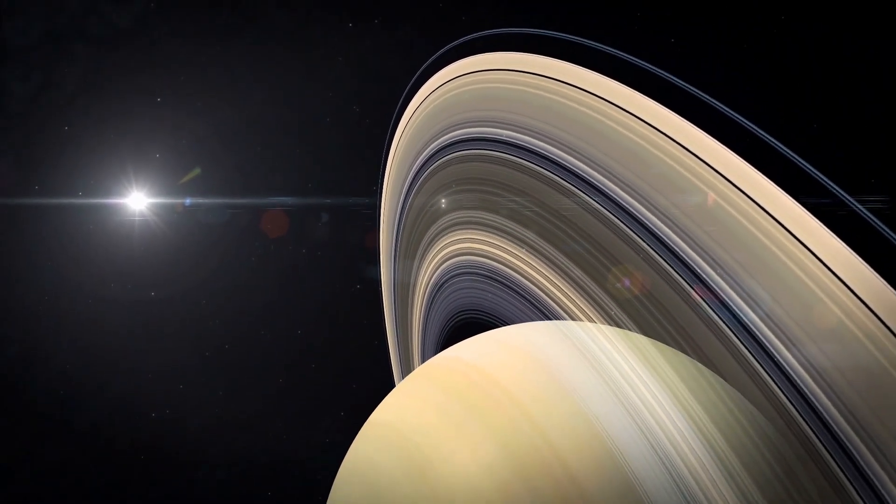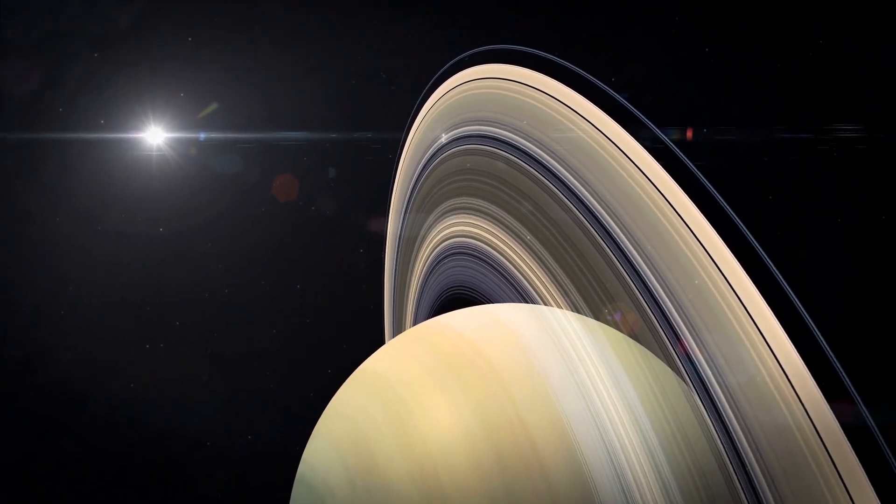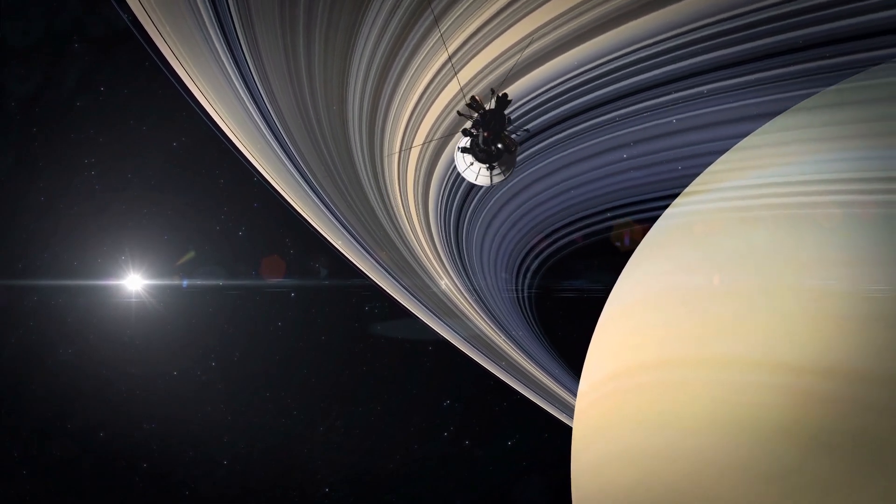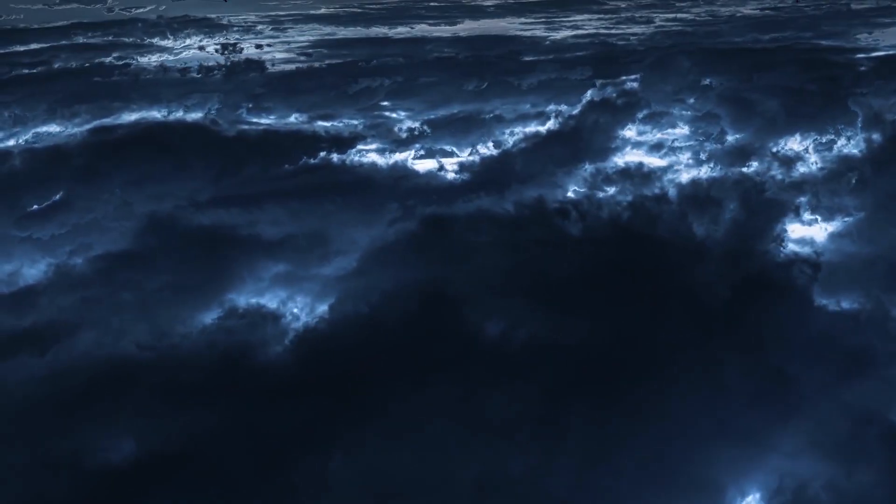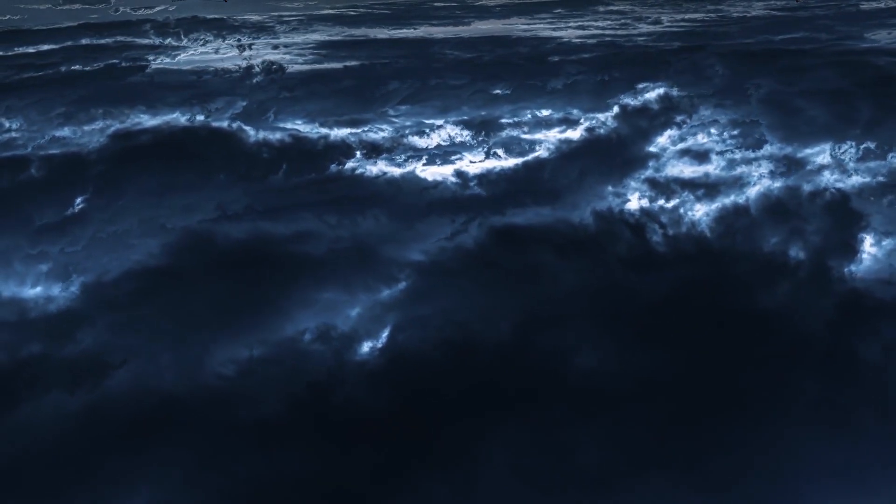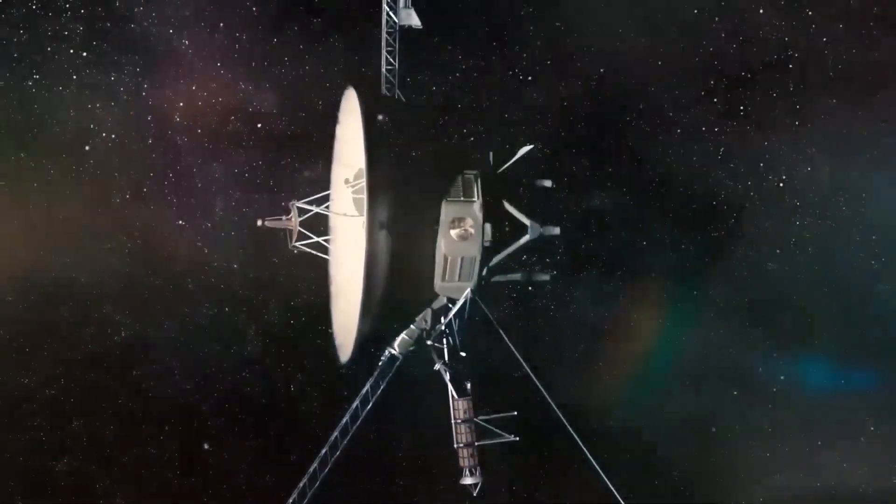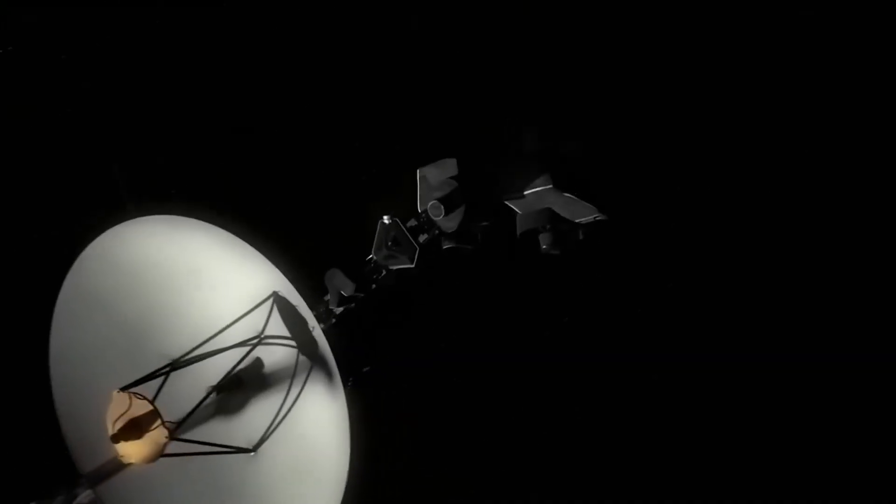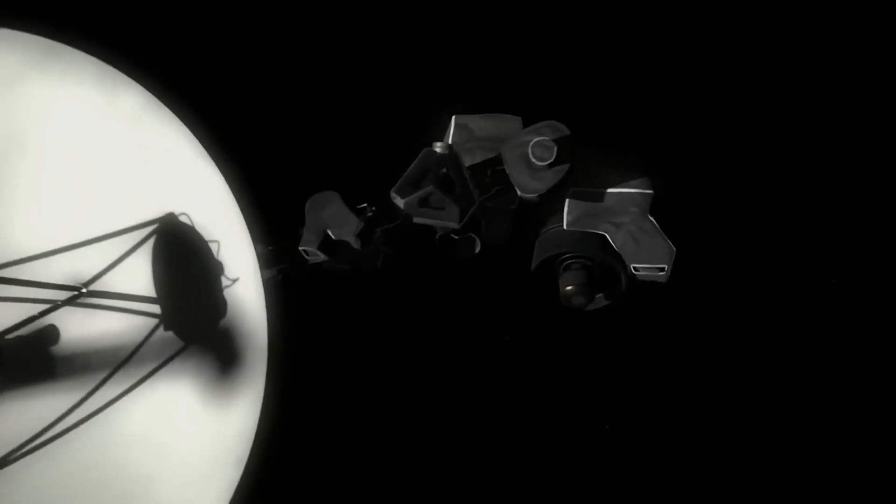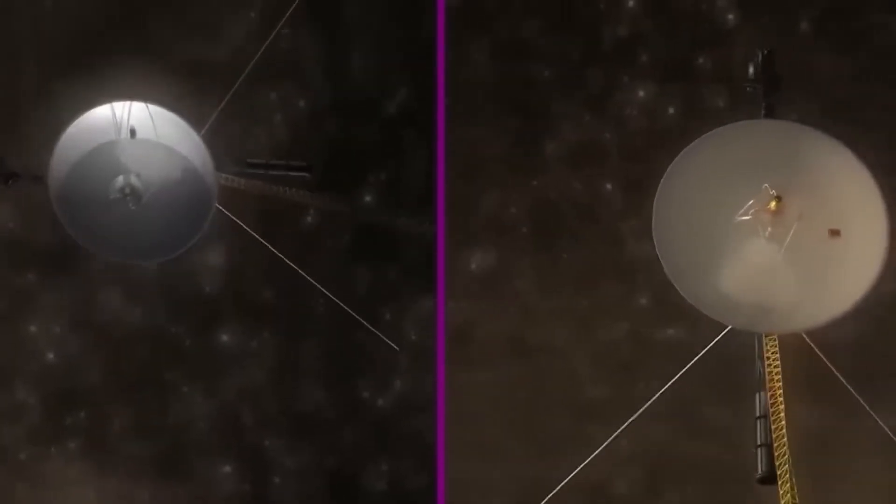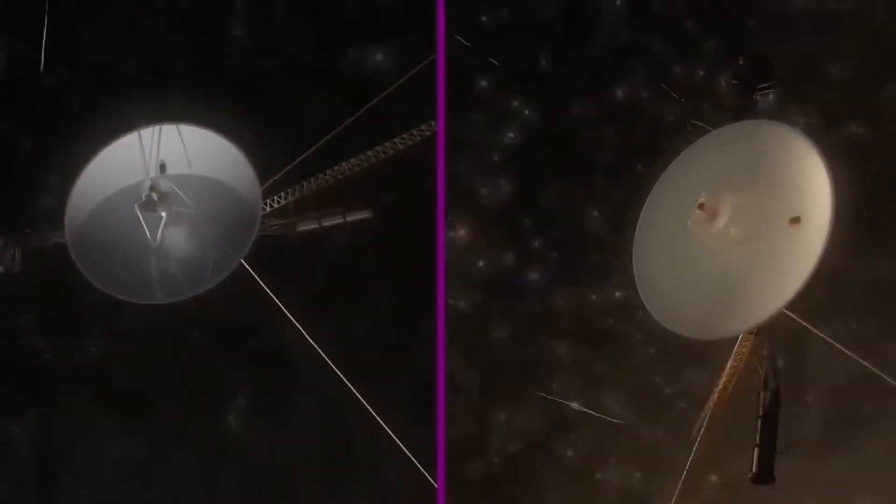Voyager 2 also made some observations that don't square up with a sharp boundary, at least not what we'd expect. The biggest of these is the magnetic field measurements inside and outside the bubble. Astronomers expected the direction of the magnetic field would be very different between the two. Yet, when Voyager 2 crossed this thin surface, there was essentially no change in the direction of the field.